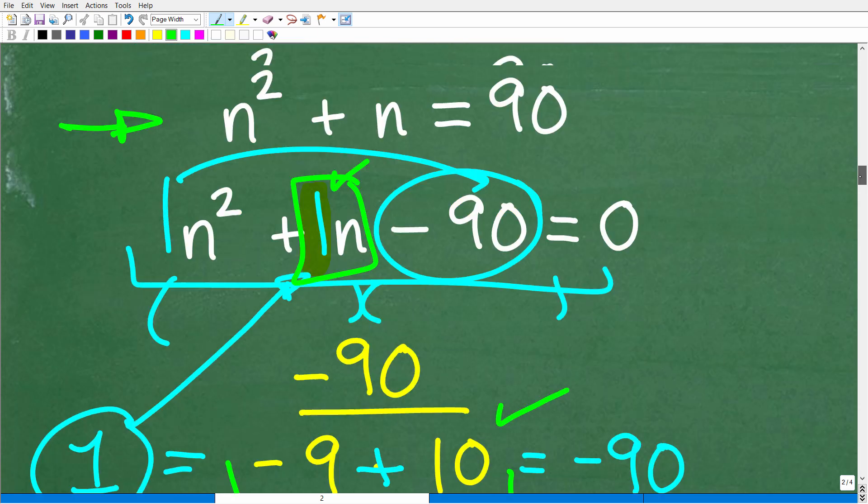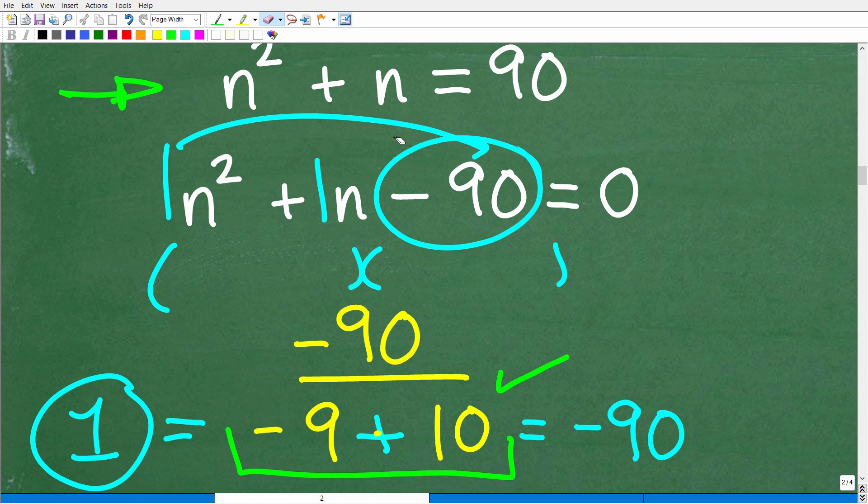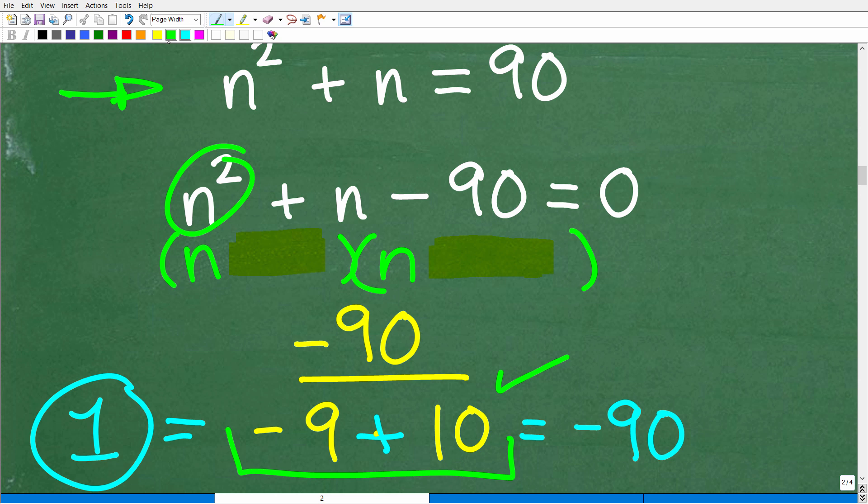The way we factor a quadratic trinomial - this is getting messy here, so let me erase this. This right here is always going to break up into a binomial. We have an N squared, so we'll end up with an N and an N right here. The hard part is to figure out what goes in here and here, but guess what? We just already figured that out. It's going to be negative 9 and a positive 10.